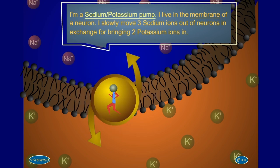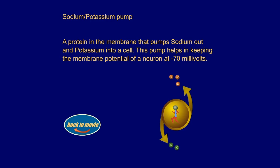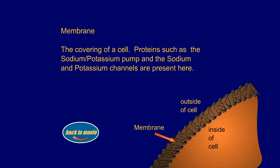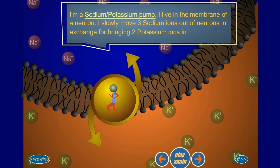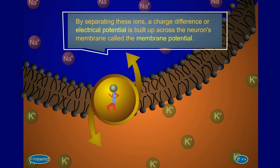I'm a sodium-potassium pump. I live in the membrane of a neuron. I slowly move three sodium ions out of neurons in exchange for bringing two potassium ions in. By separating these ions, a charge difference, or electrical potential, is built up across the neuron's membrane, called the membrane potential.